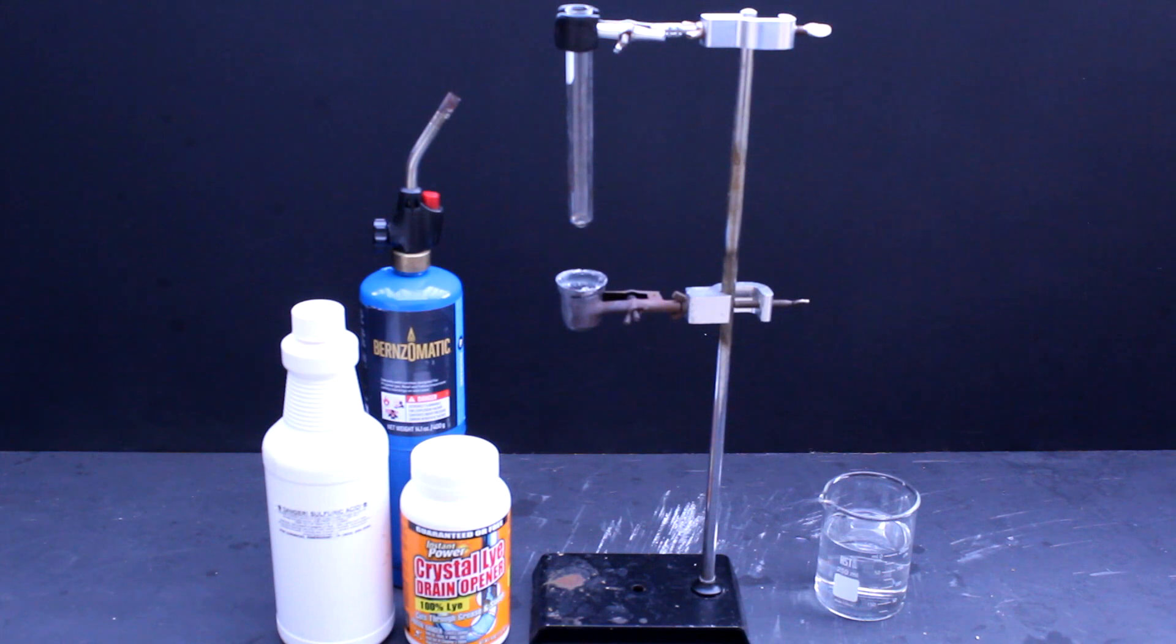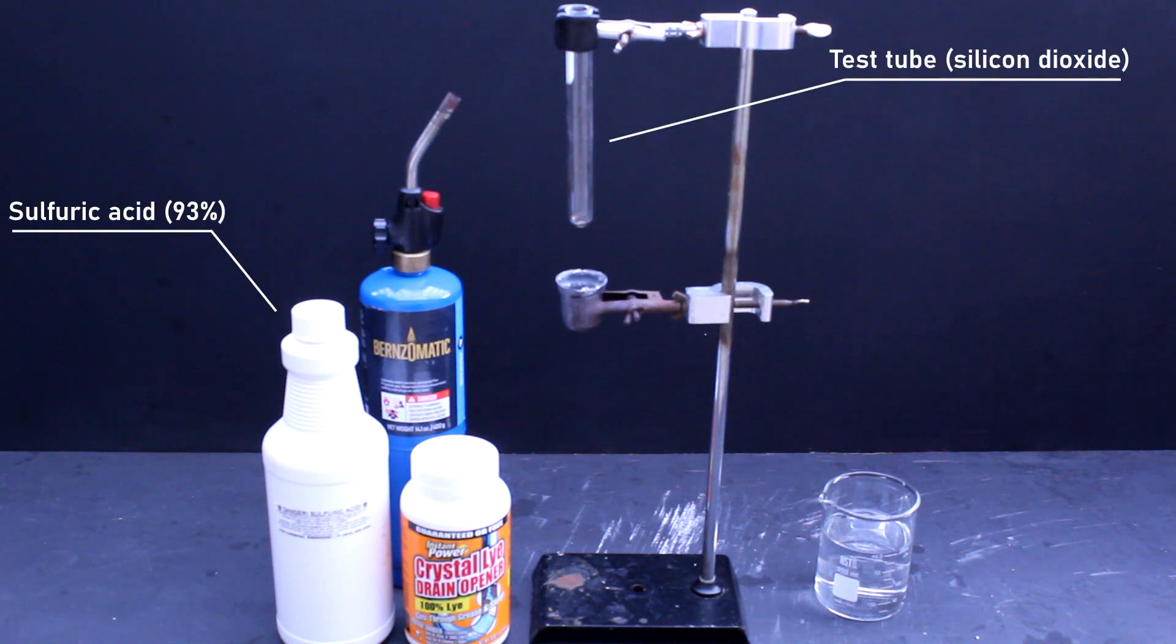To do this, we'll only need three ingredients: sodium hydroxide, an acid, and some form of glass. I'm going to be using sulfuric acid and this old test tube, and the sodium hydroxide just came from the store as this crystal drain cleaner.